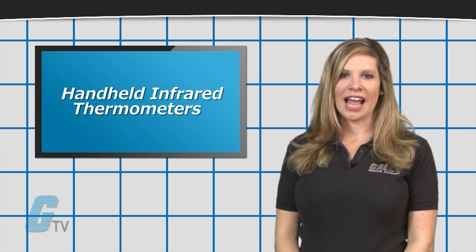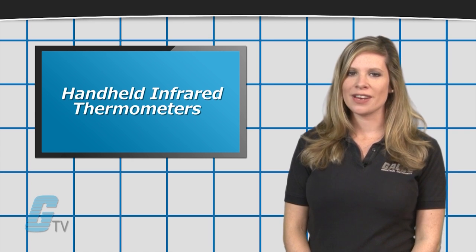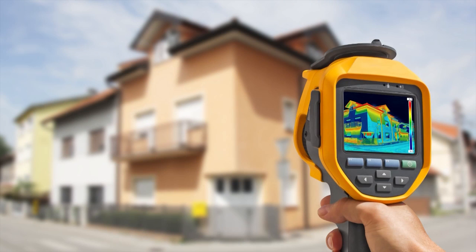It is also worth mentioning that handheld IR thermometers can only measure the surface temperature of an object. An IR camera is suggested if you wish to measure the internal temperature of an object.